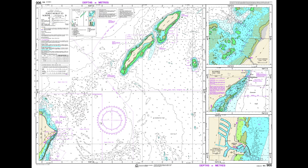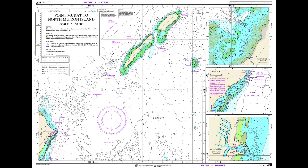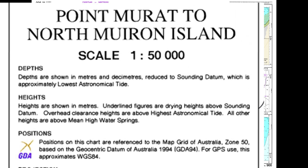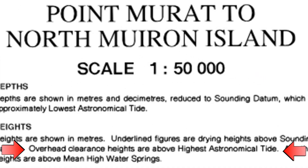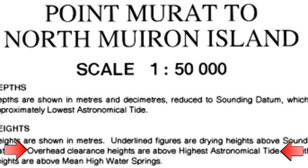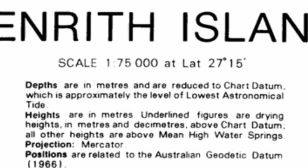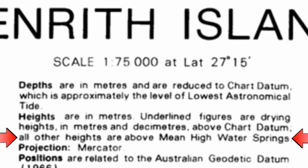This reference point may vary depending on the chart. To find this datum, refer to the chart's title block. On some charts, the chart datum for overhead clearance heights is taken as highest astronomical tide. On other charts, it is the mean high water springs. Always verify the datum in the chart's title block.